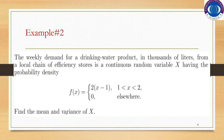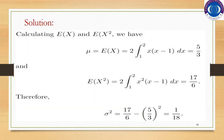Let me explain this through an example. The weekly demand for a drinking water product in thousands of liters from a local chain of stores is a continuous random variable x with probability distribution f of x equals 2 times x minus 1, defined on the limit 1 less than x less than 2, and 0 elsewhere. Find the mean and variance of x.